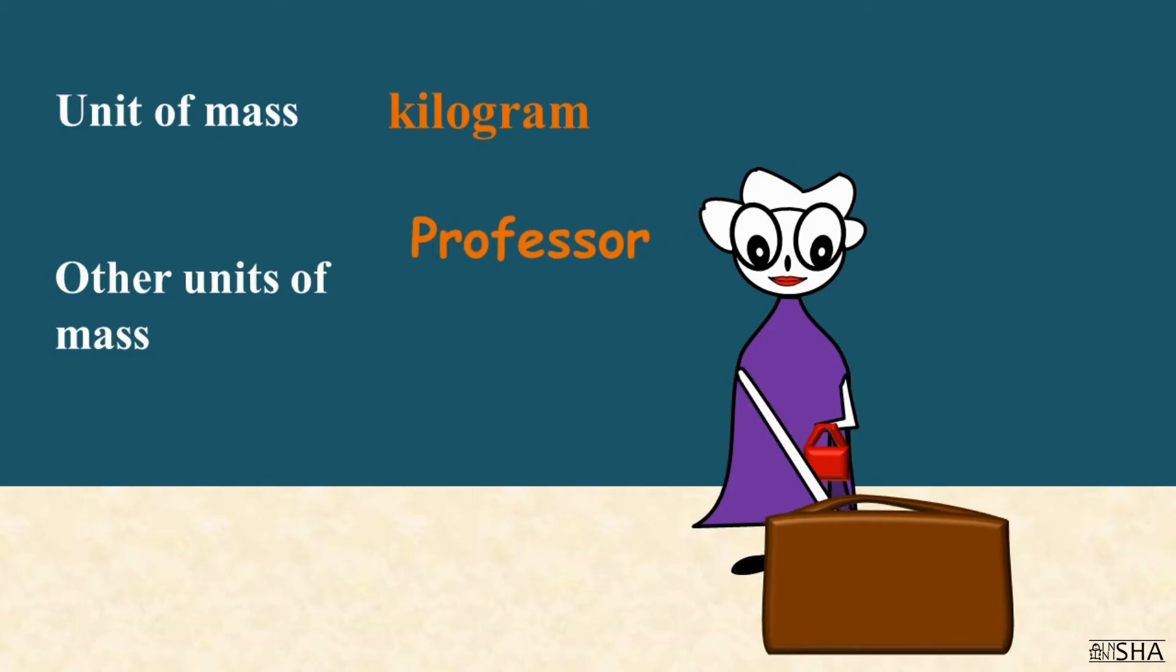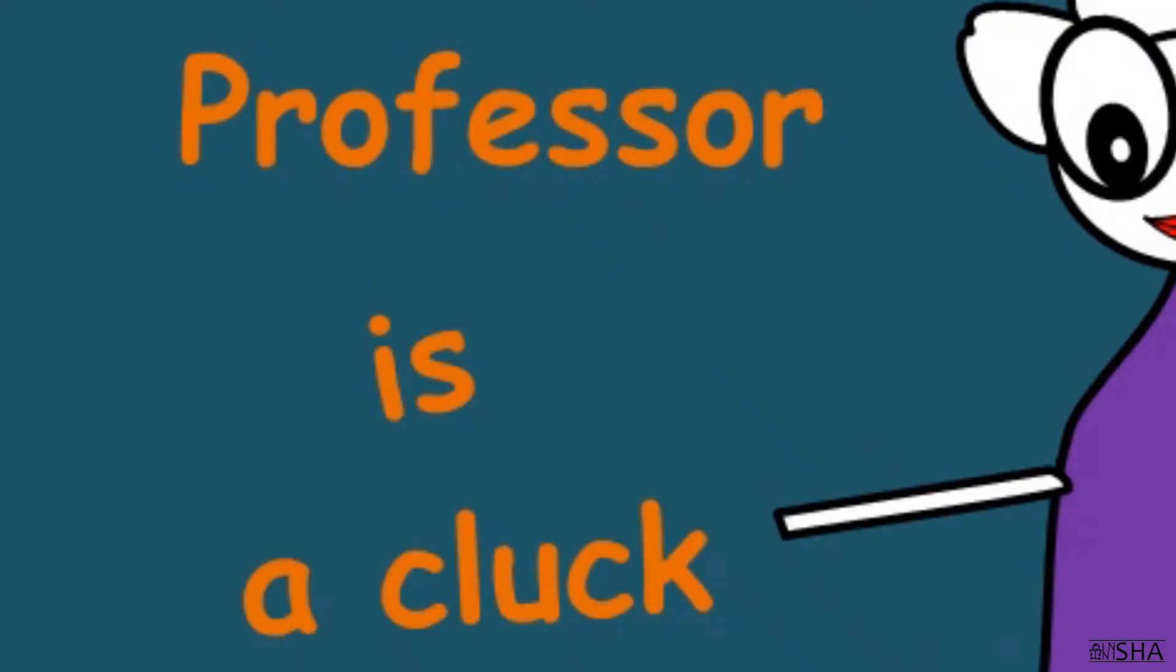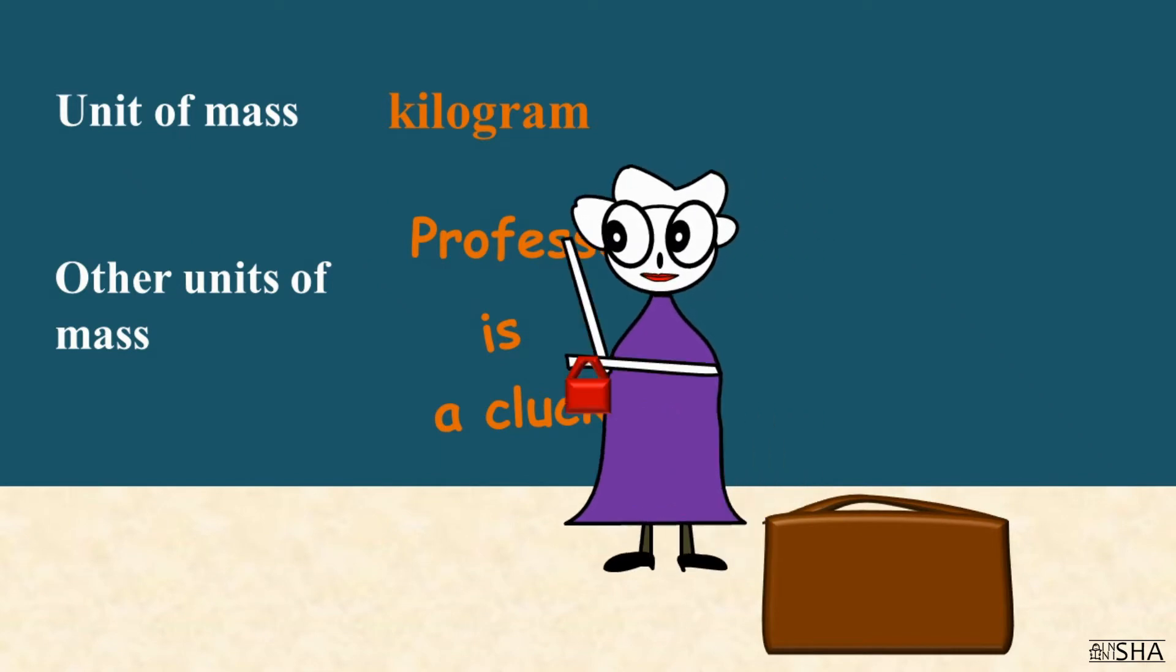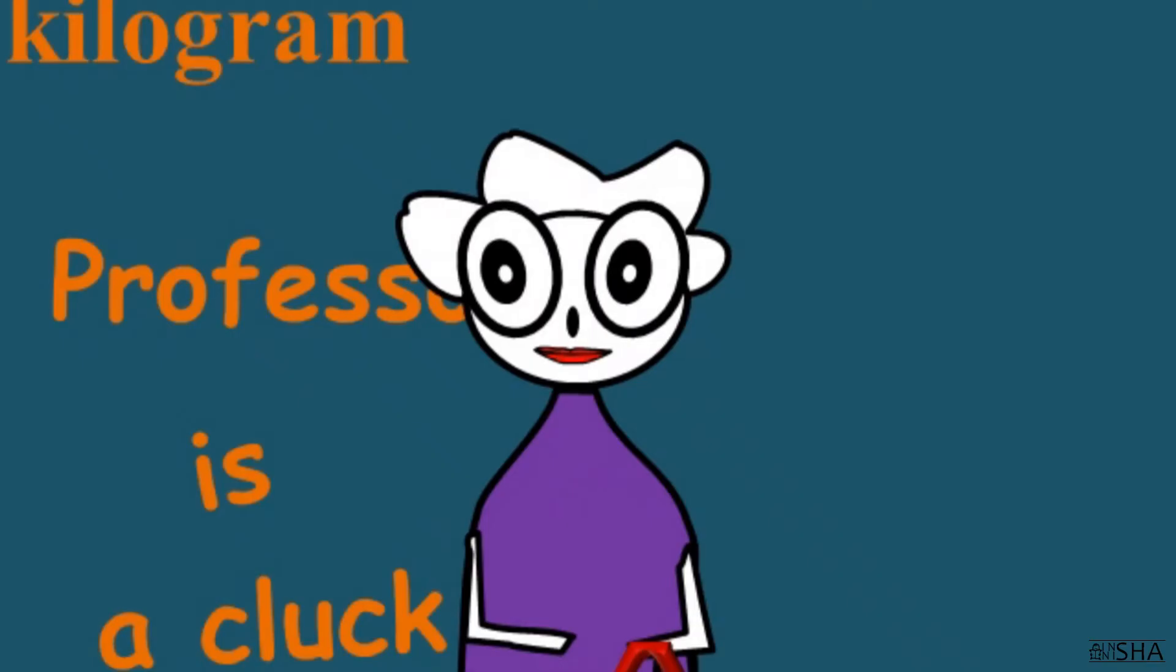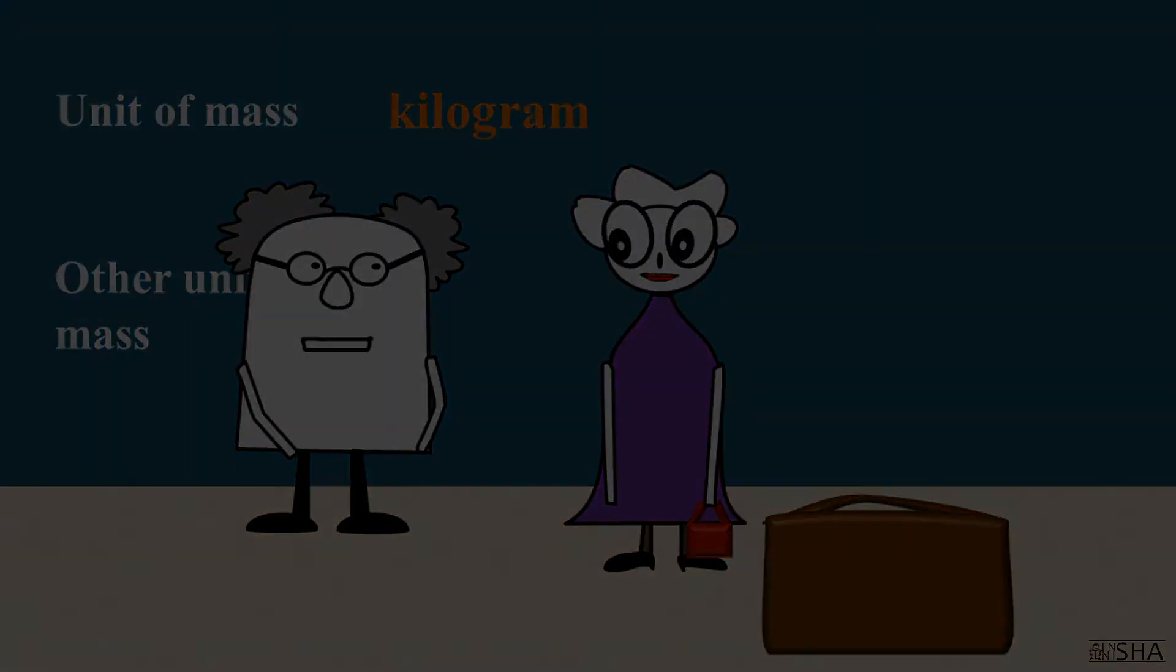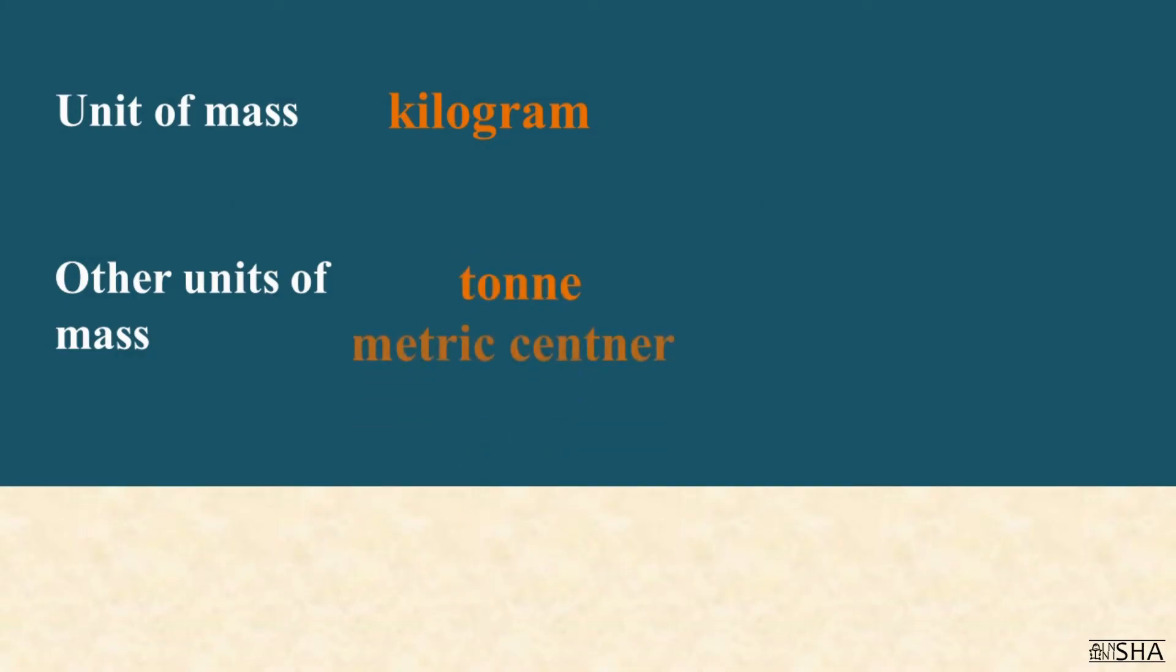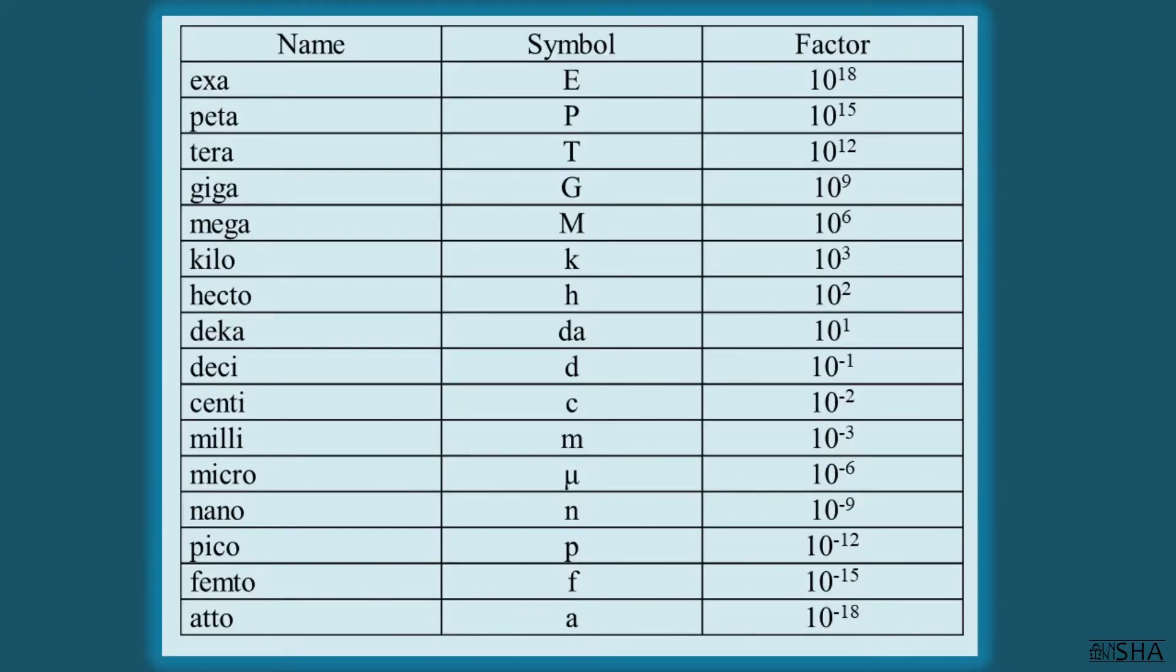While other units of mass, for example, ton, metric centenar, or gram, do not contain prefixes from table 2, which we constantly used in the previous episodes.